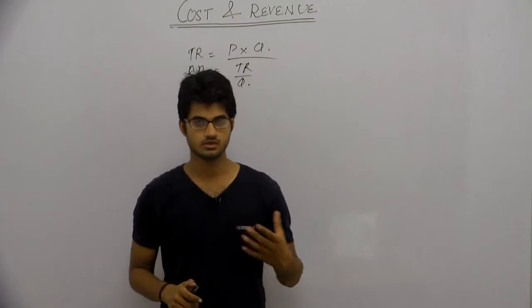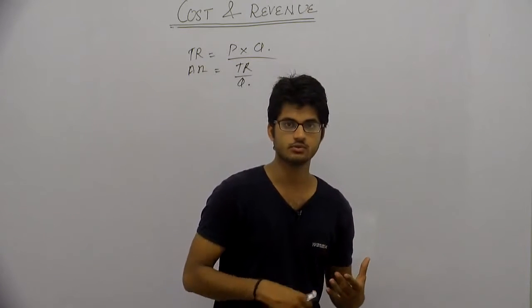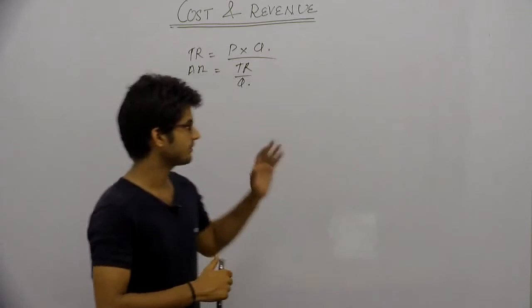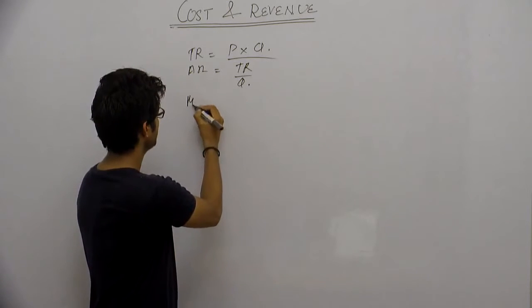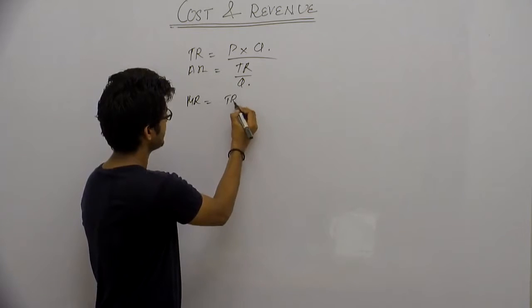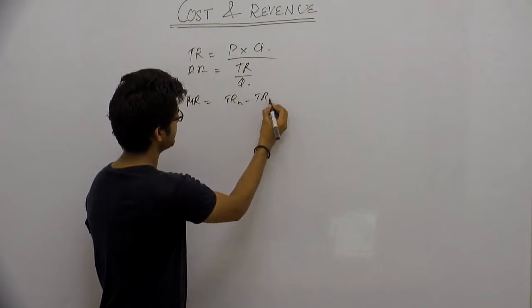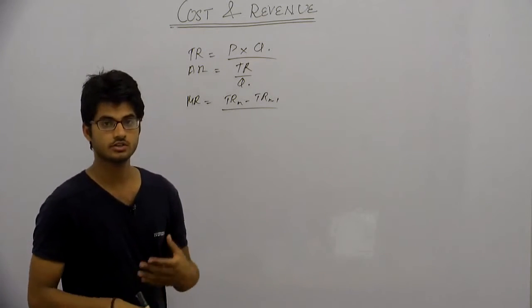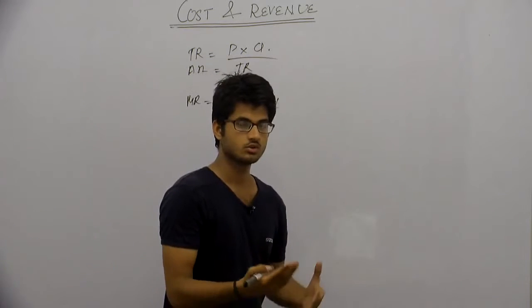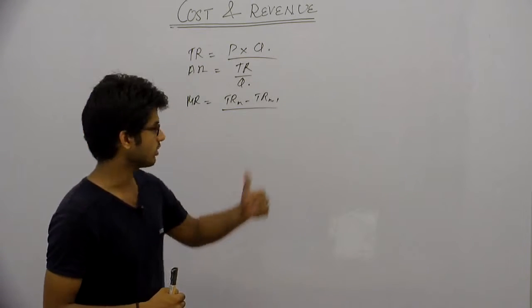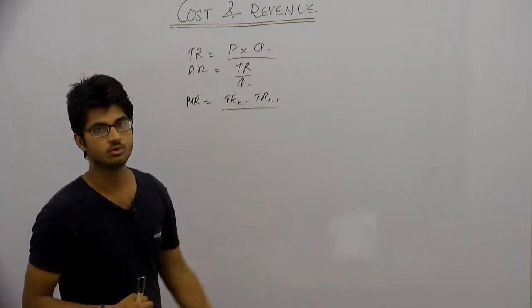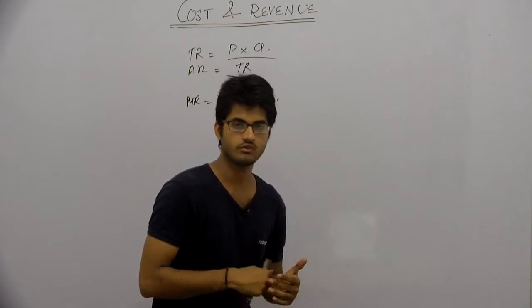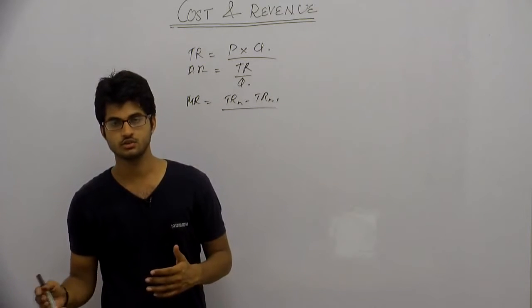Marginal revenue is the revenue that we get from the additional selling of a unit. It can be calculated as MR equals TRn minus TRn-1. When we sell an additional unit, the revenue we get from it is called marginal revenue. It can also be called the change in total revenue when an additional unit is produced.